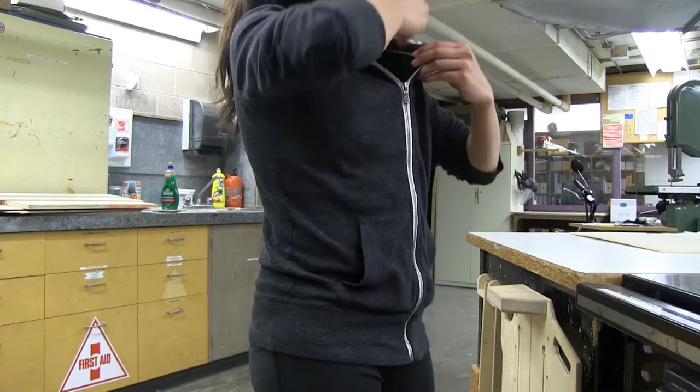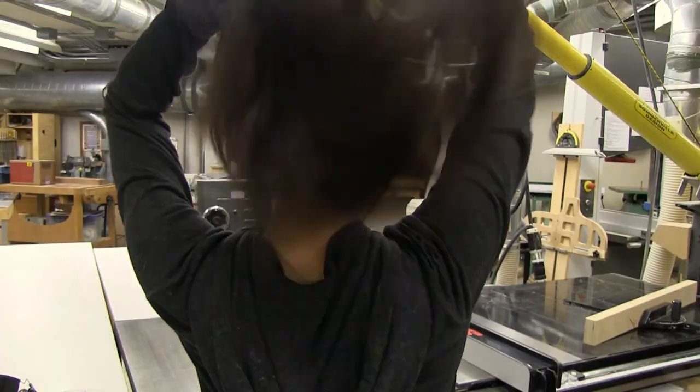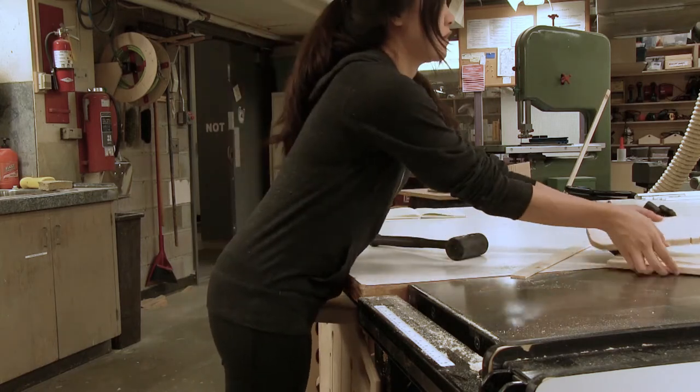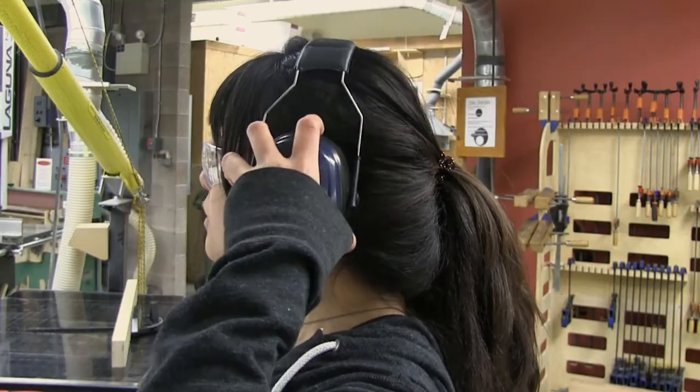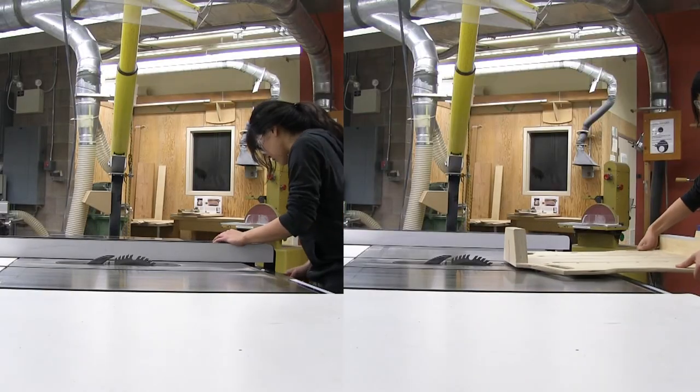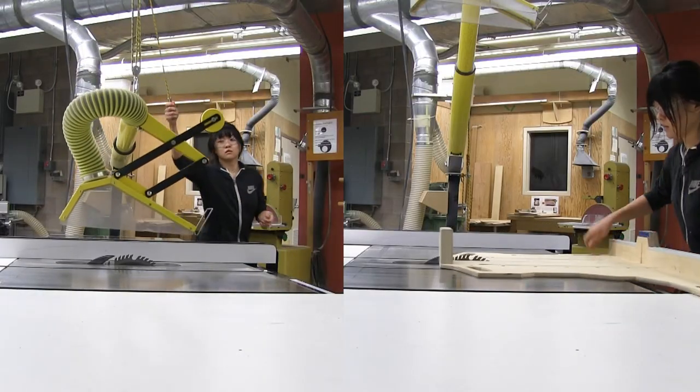Do not start the table saw until you ensure all loose items on your person are securely fastened, the work area is clear of obstructions, and your ear and eye protection are on. With all safety procedures met, you are ready to make your cut on the table saw.